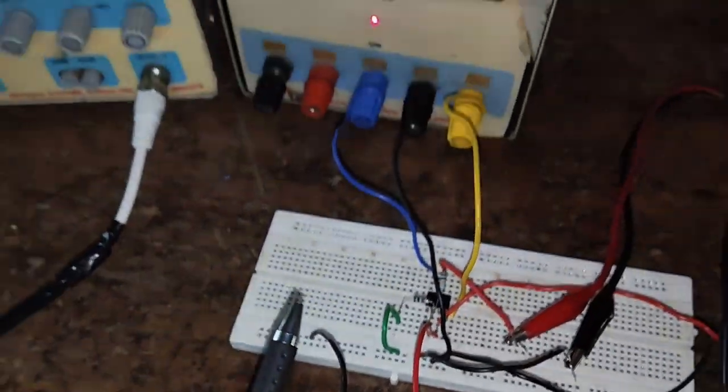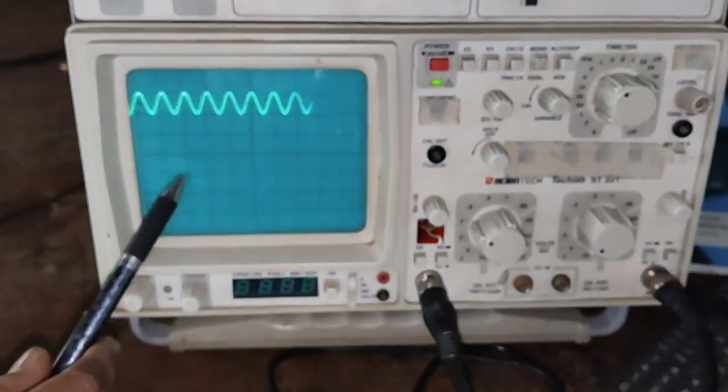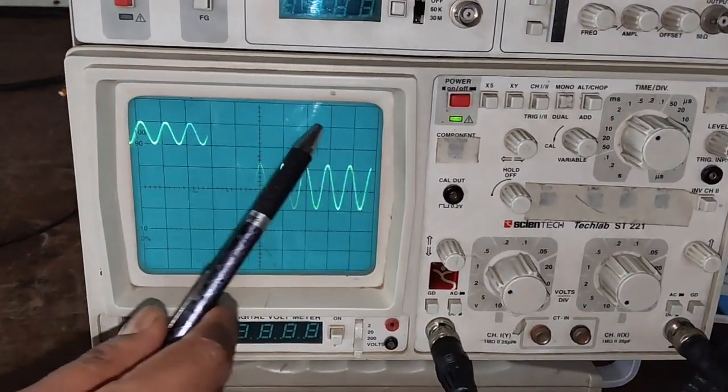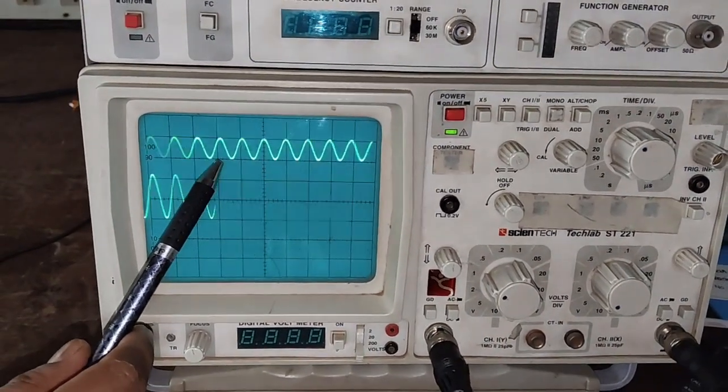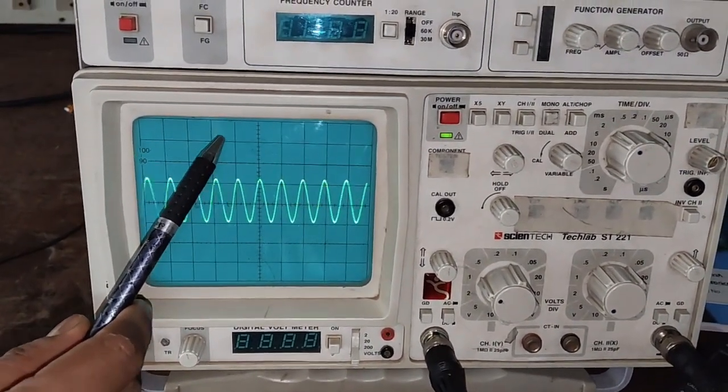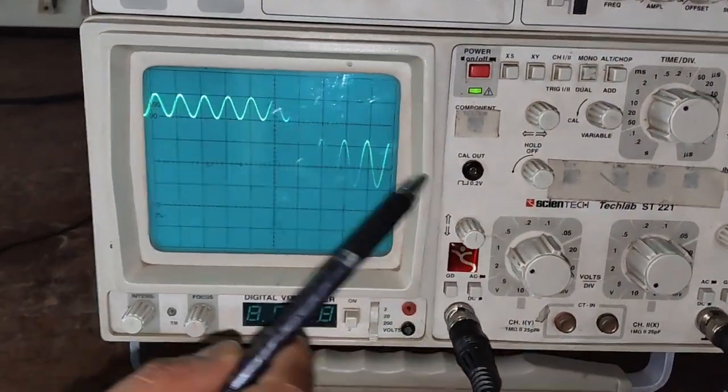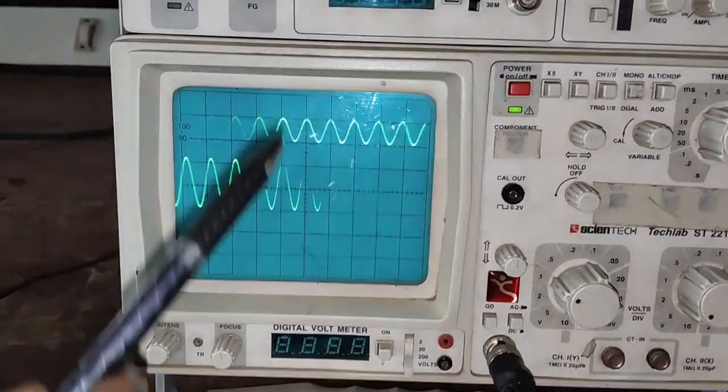The same waveform can be observed on the CRO. Here, the upper waveform is the input signal. It is 1 volt, which is 1 division at 1 volt per division. Now we will observe the output.